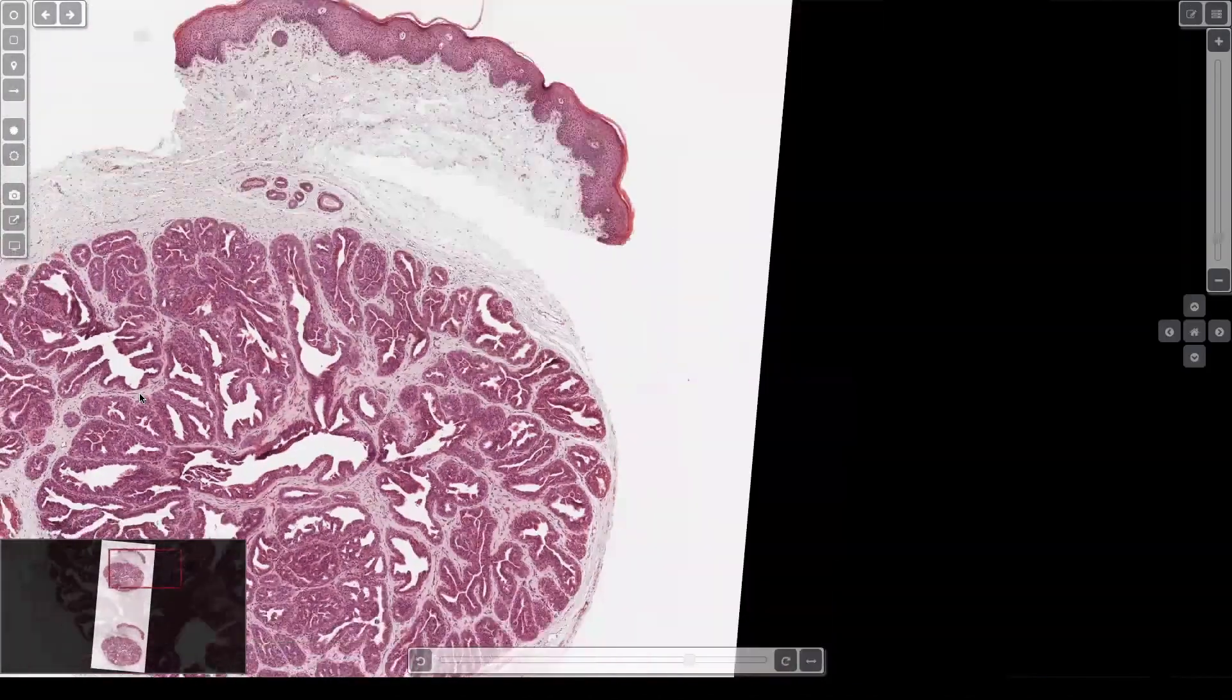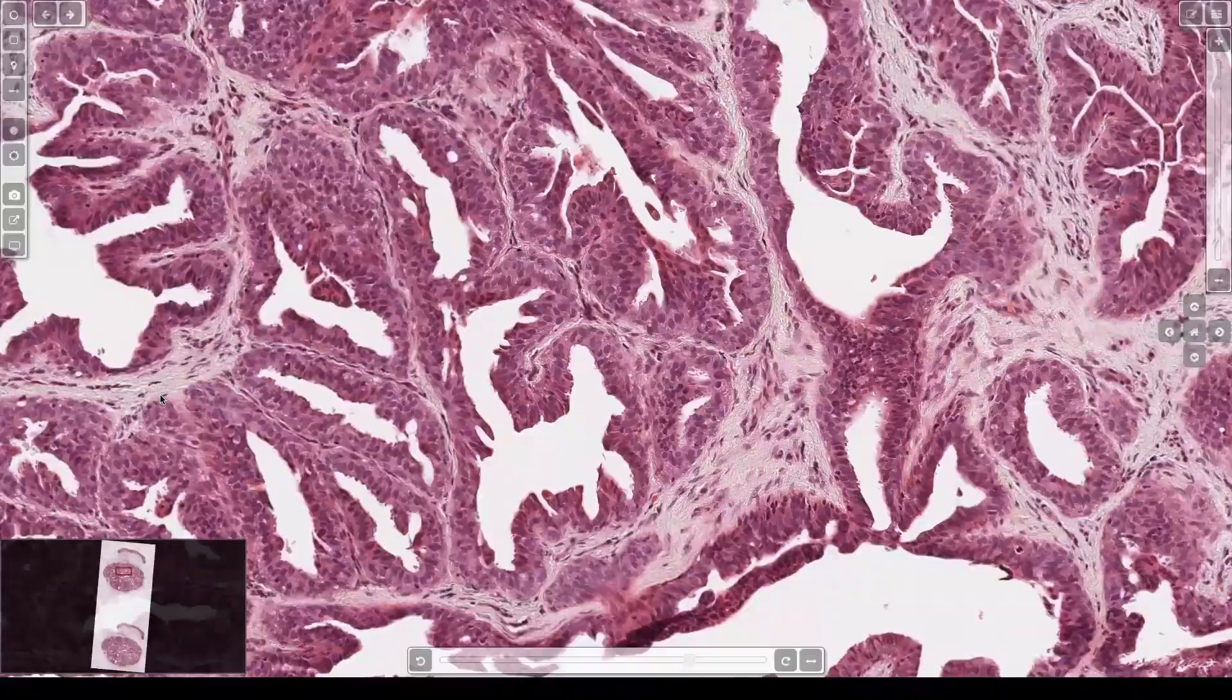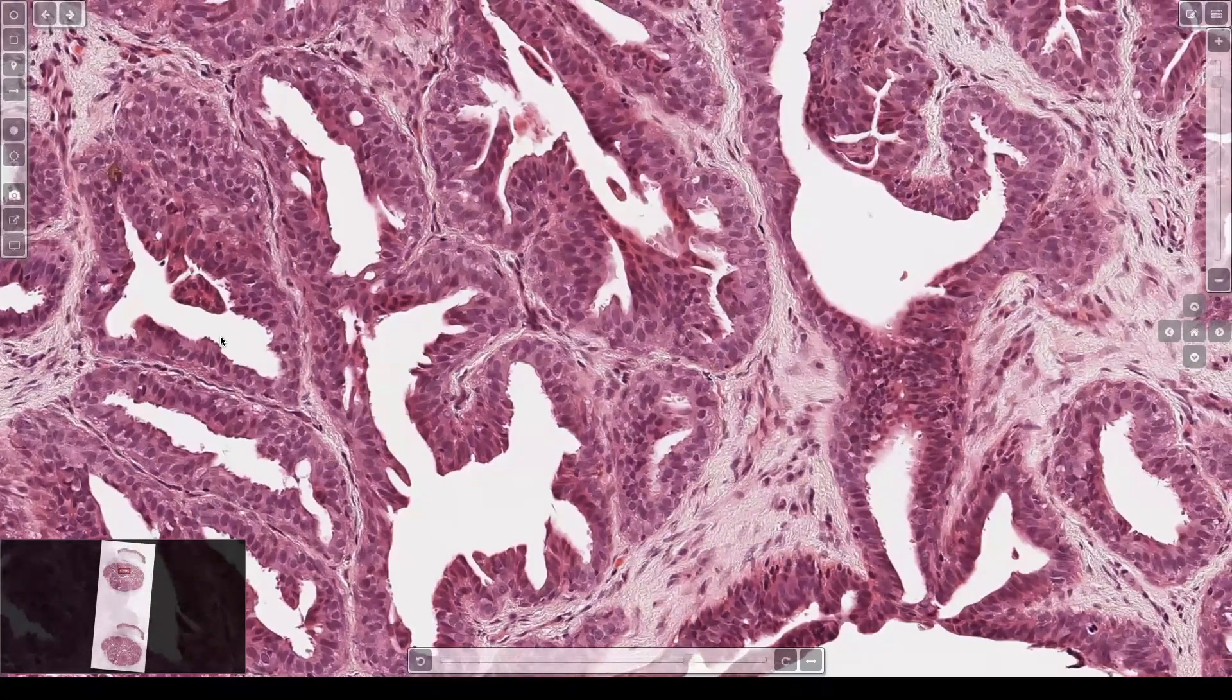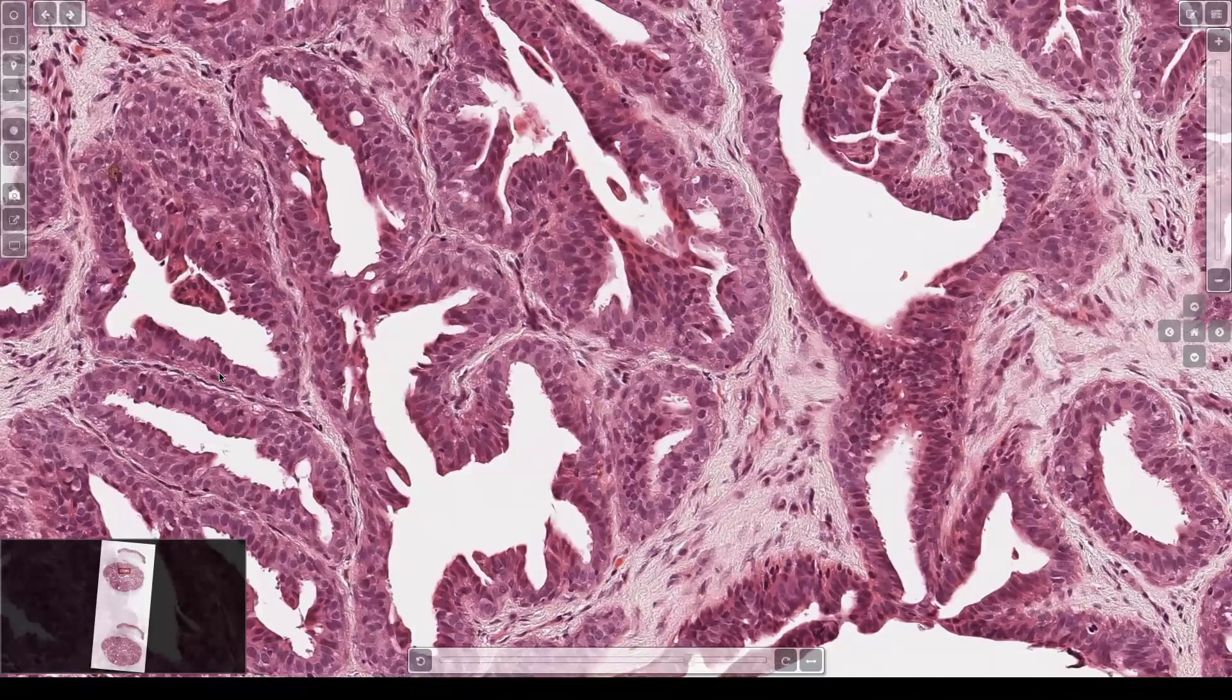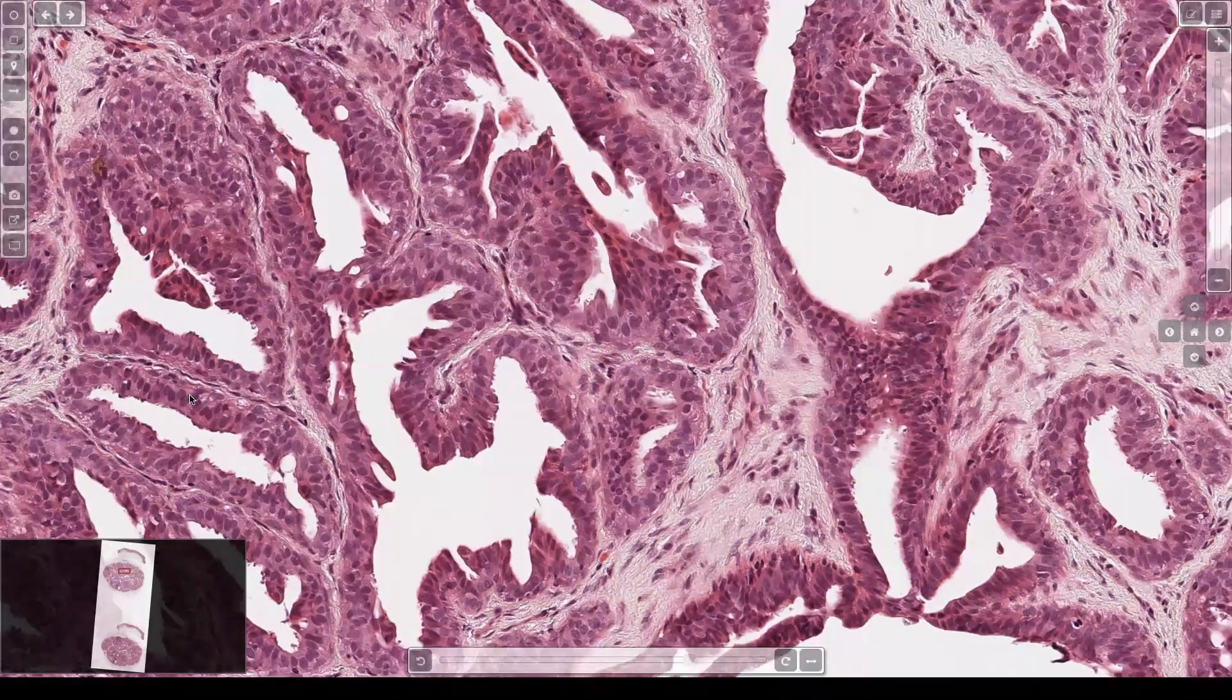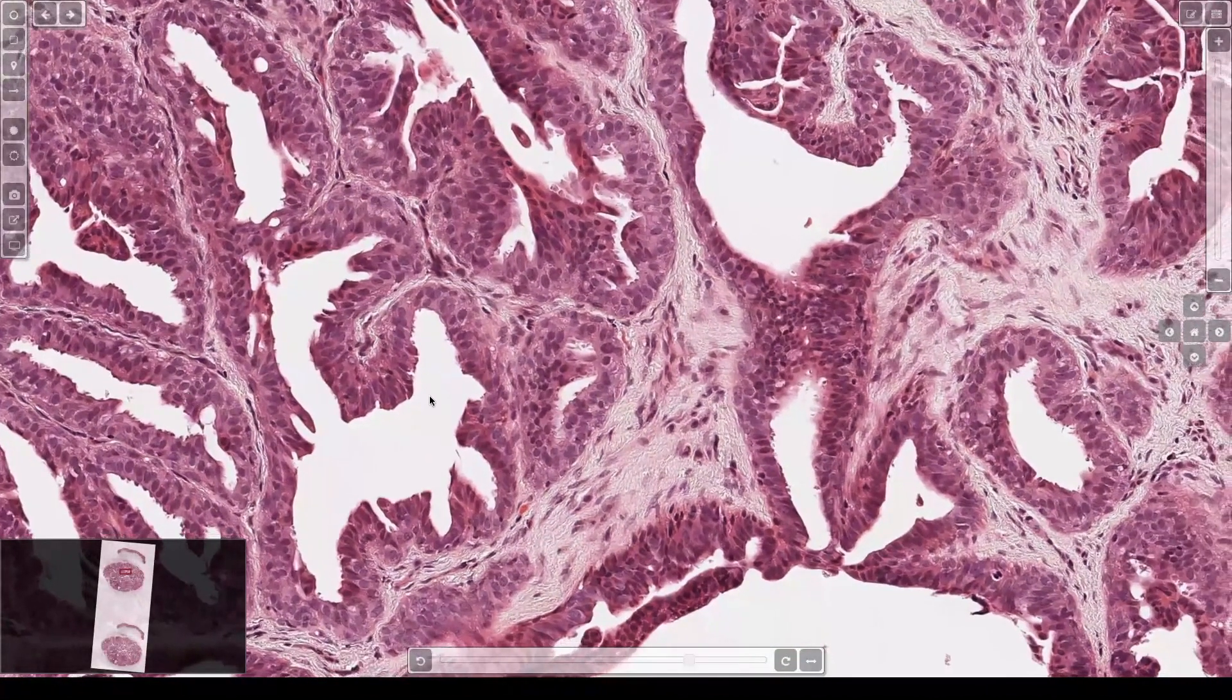And if you look closer at the lining cells, you'll again see that same thing that we saw in SCAP. I think there's a lot of overlapping between this lesion and syringocystadenoma. You'll have the inner columnar layer with little apical tufts or snouts, and an outer basaloid layer that's usually got myoepithelial differentiation.